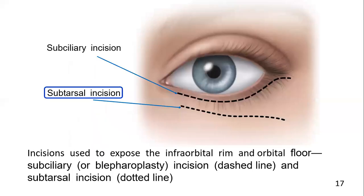The incision is optimally placed just inferior to the tarsal plate, that is five to seven mm below the lid margin. However, the incision is diagonally oriented and starts immediately about two to three mm below the lid margin and courses in a lateral canthal direction. Remember that the subciliary incision is about two to three mm below the lid margin, whereas the subtarsal incision is in the subtarsal area, almost five to seven mm below the lid margin.